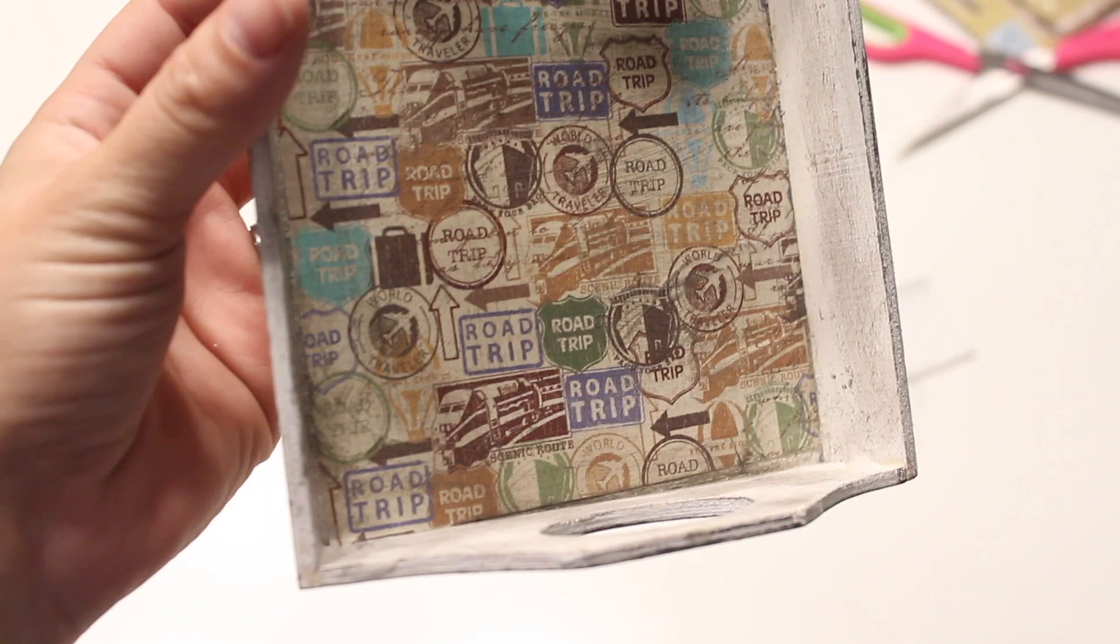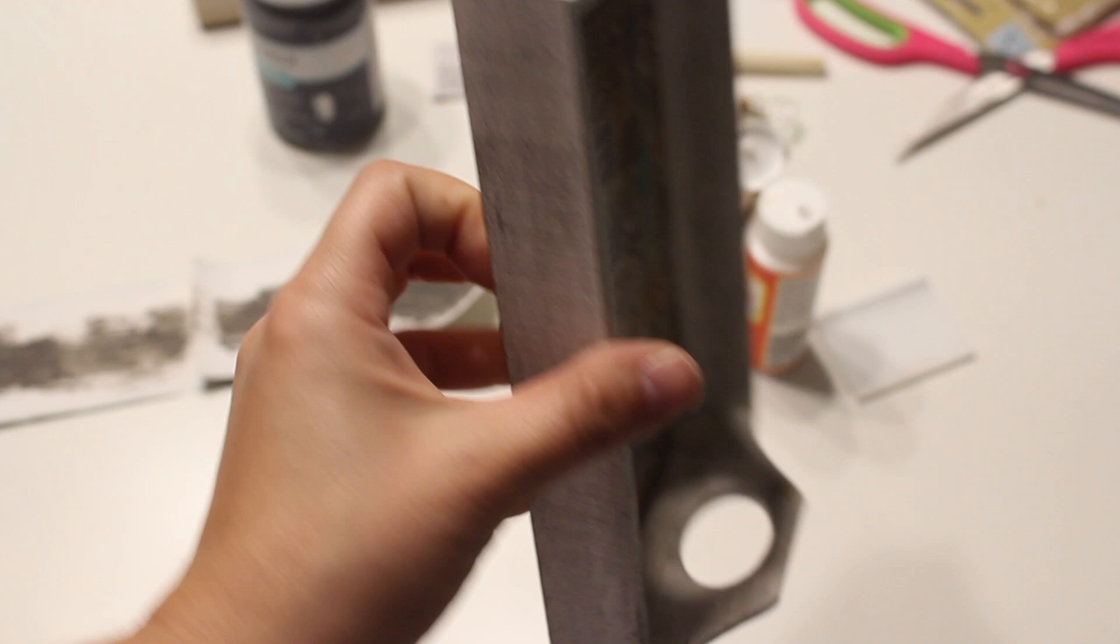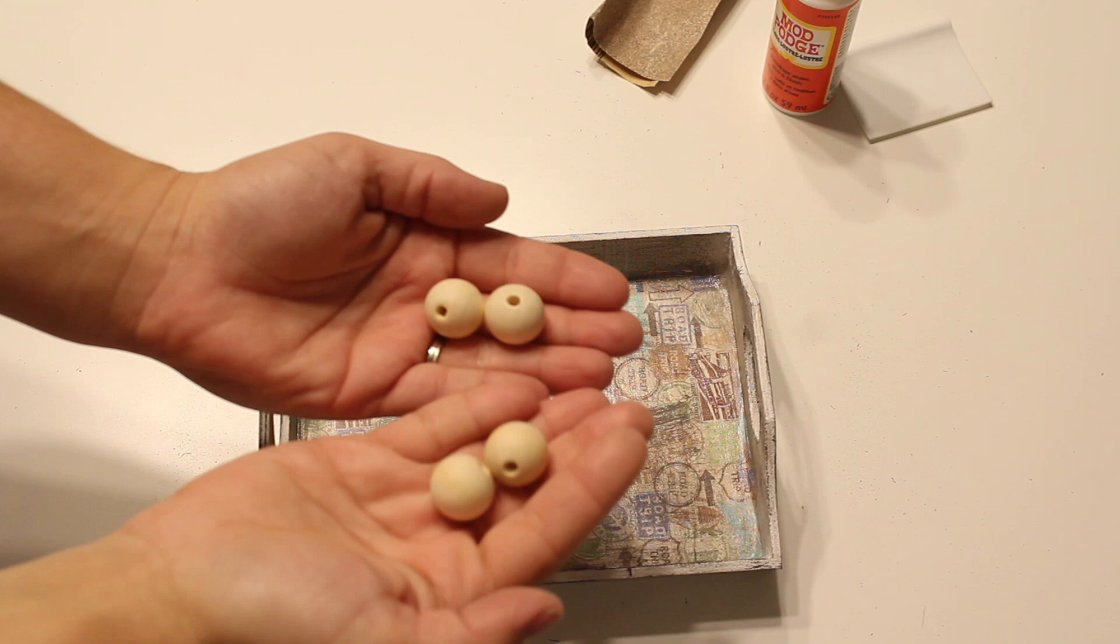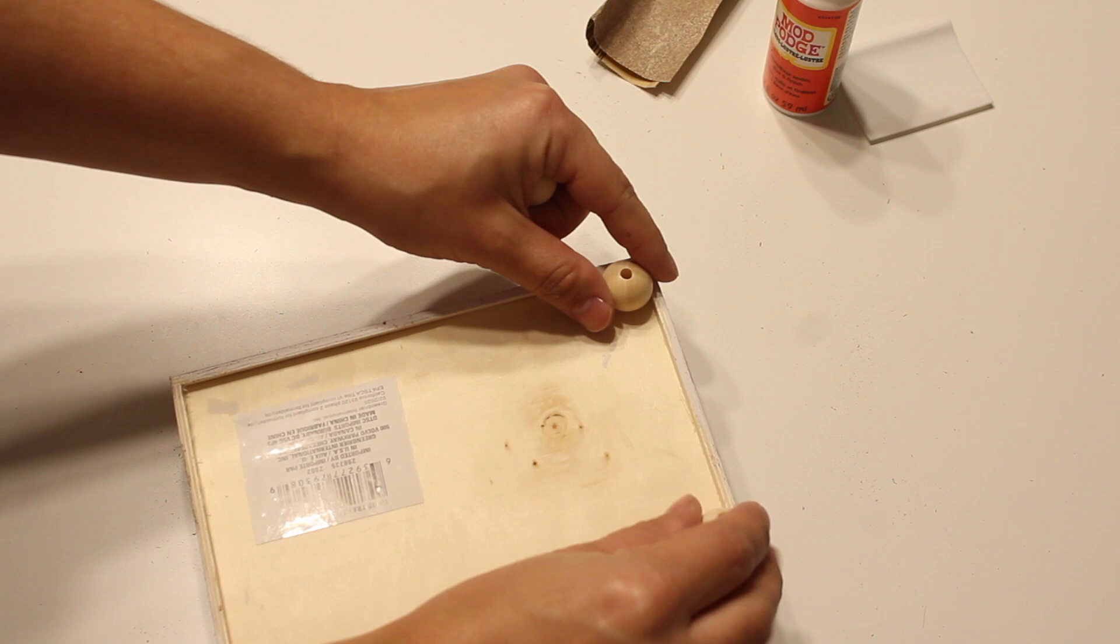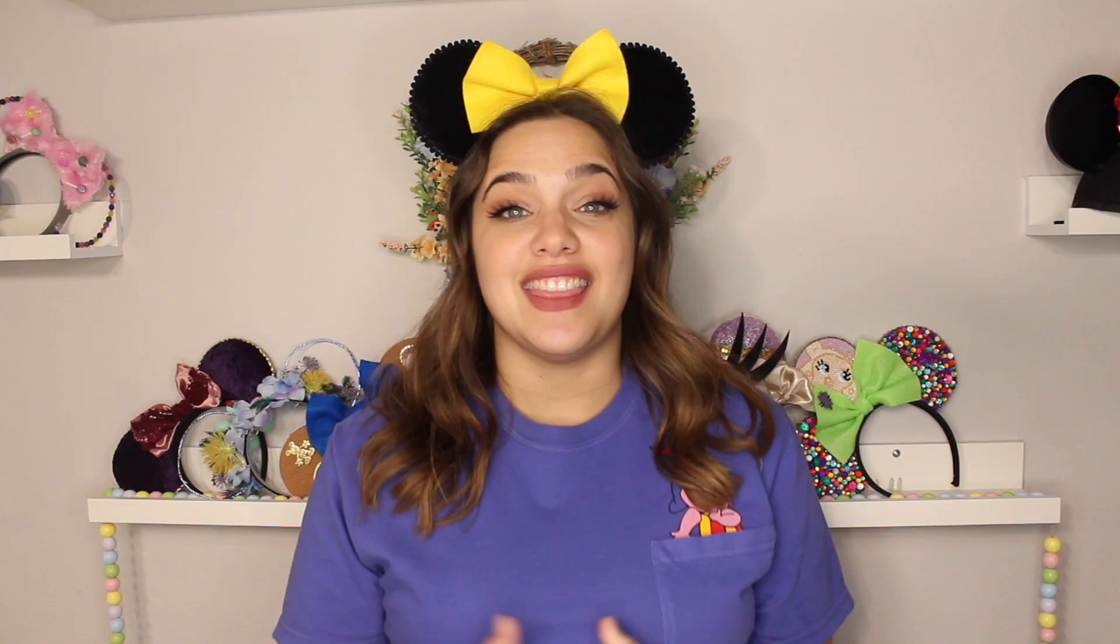This is what my tray looked like once it was all done. Again, sorry about the lighting. I tend to film a step a day and this is at night. These are the edges of the tray. I did not paint the bottom, but you always could. If you wanted to, you could also add feet to the bottom of your tray using little beads like these. I did not do this step. I didn't feel the need to put feet on mine, but you could always just glue these on with a little bit of hot glue. If you wanted to paint them, you could, or you could just leave them that natural wood color.